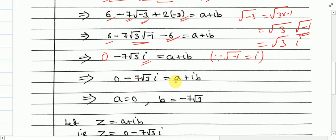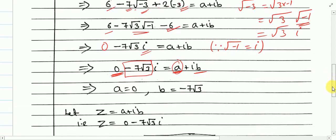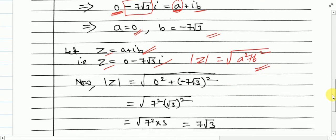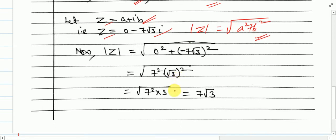Now compare both sides: the real part is 0 and the real part on the right is A; the imaginary part B is minus 7√3. So we got A and B. Now modulus of z = A + iB is given by √(A² + B²). Using this formula we get the modulus.